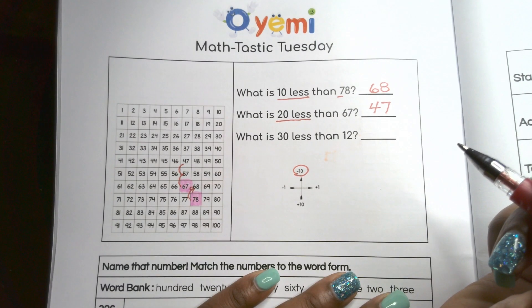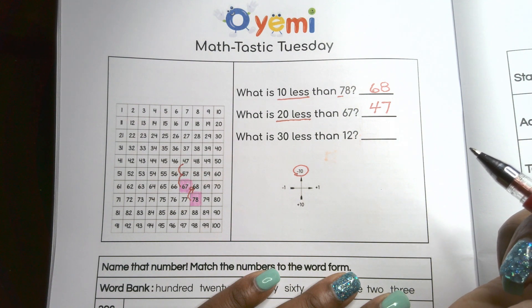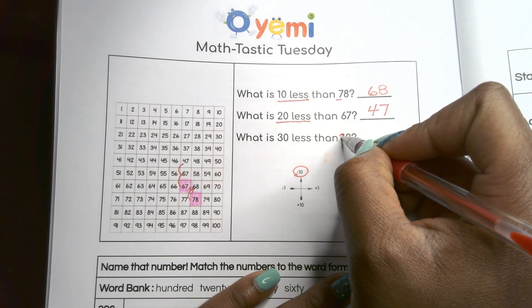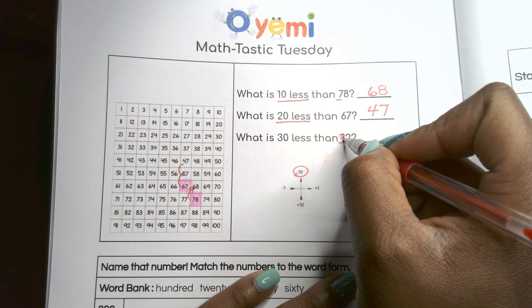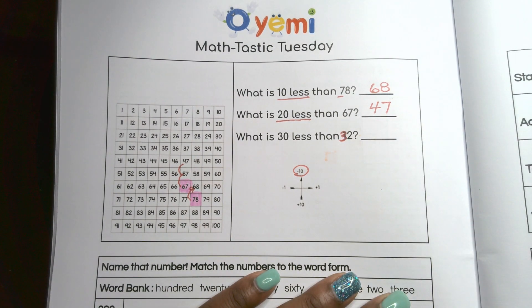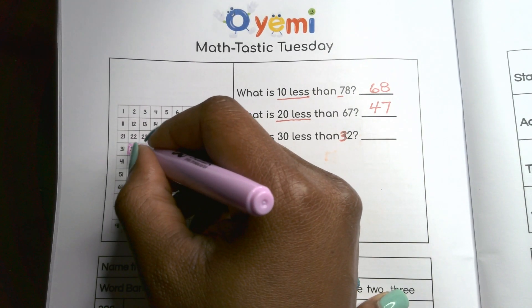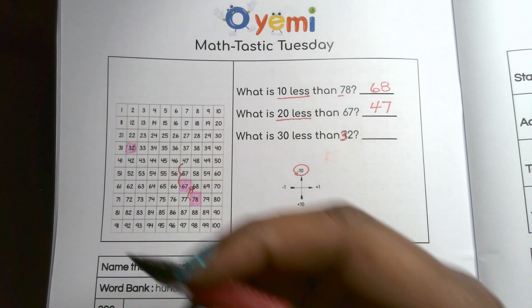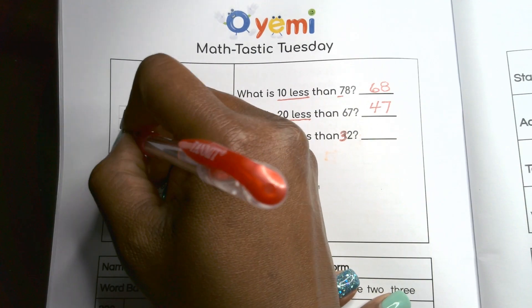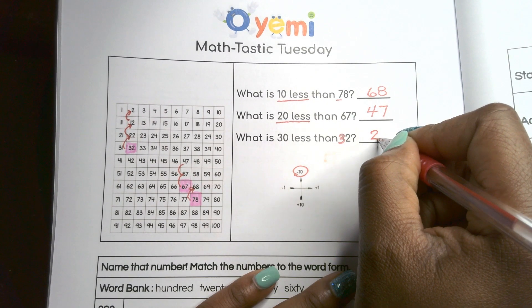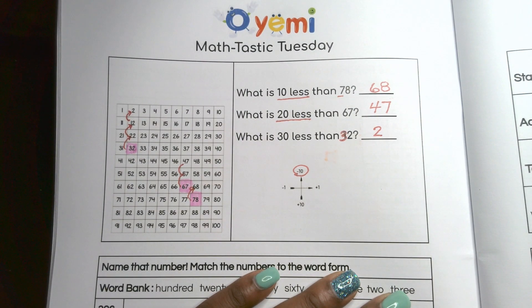Here I have 30 less than 32 — this should be 32, so if you had the book you may have noticed a typo. 30 less than 32: I count 10, 20, 30 rows up and I end up with just the number 2. So 30 less than 32 is 2.